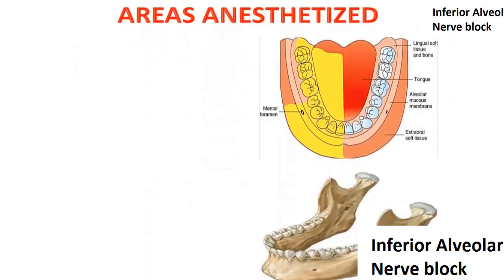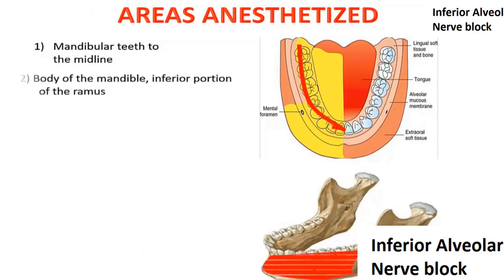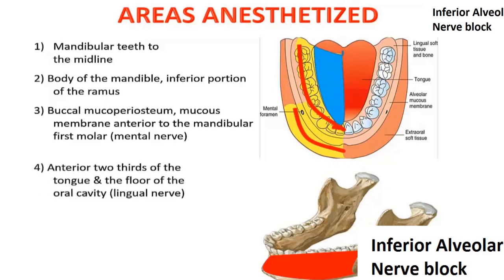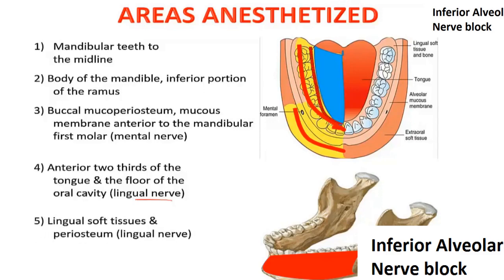The areas anesthetized are the mandibular teeth to the midline, the body of the mandible, inferior portion of the ramus, buccal mucoperiosteum, mucous membrane anterior to the mandibular first molar, and the anterior two-thirds of the tongue and the floor of the oral cavity — the last by the lingual nerve. Since the lingual nerve is very close to the mandibular nerve, whenever you give the inferior alveolar nerve block, the lingual nerve is usually also anesthetized. This also covers the lingual soft tissue and periosteum.